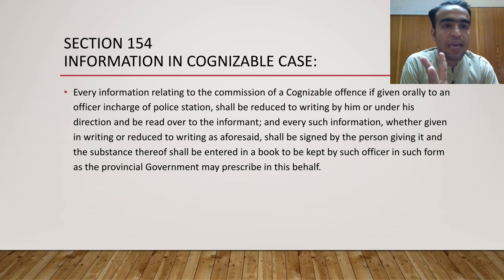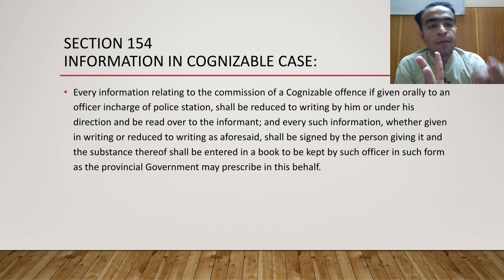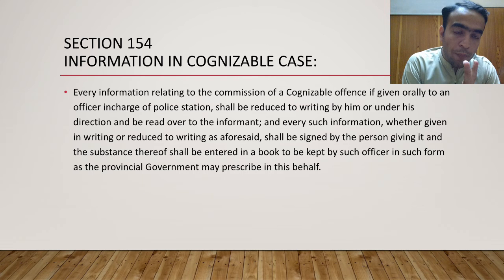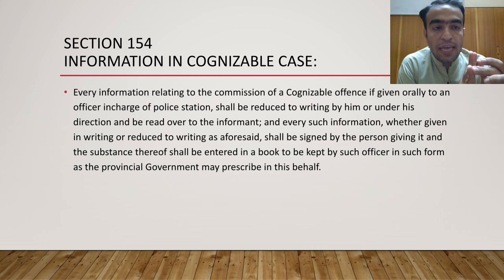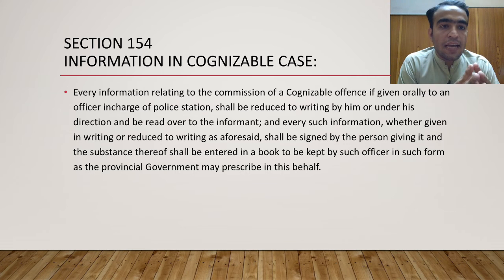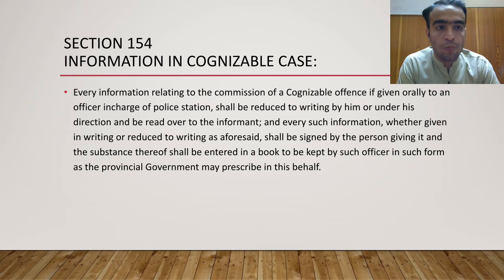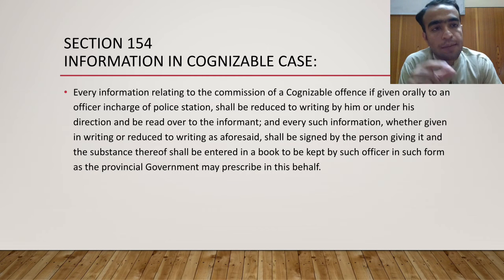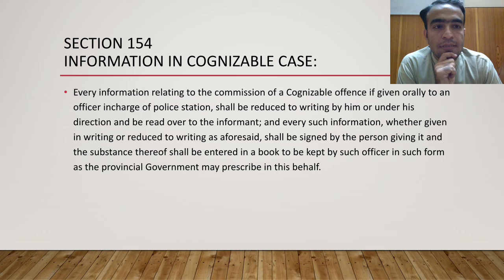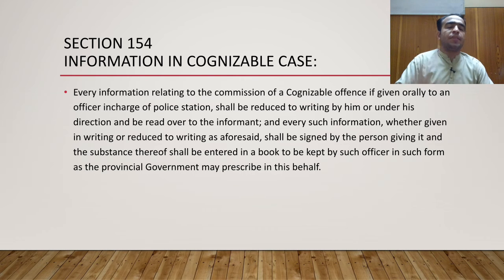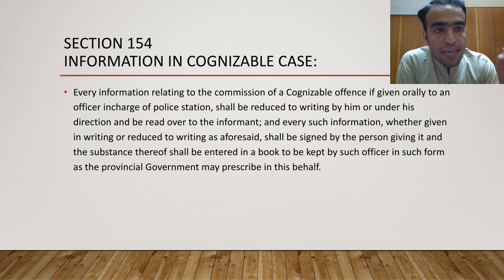The written record must be read back to the informant. Additionally, information is not limited to oral form — it can also be given in written form. For example, if a murder has been committed, the informant can give information orally or submit it in writing stating the facts and circumstances. Whether given orally or in writing, the information shall be signed by the person giving it — the signature of the informant is mandatory.